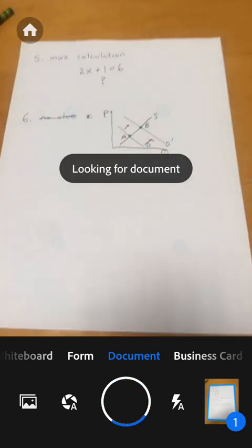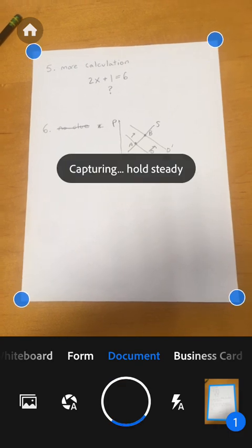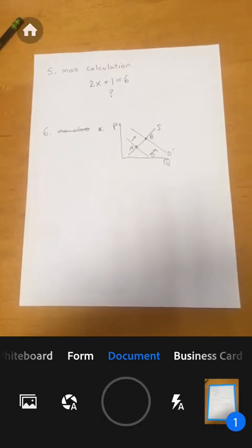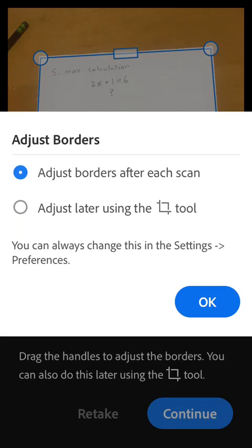I'm going to flip my document over to get the second page. It's looking. It found it. I'm holding steady. Now it's processing page number two. Looks like it did a good job cropping off the junk on the edge. So now we're good.